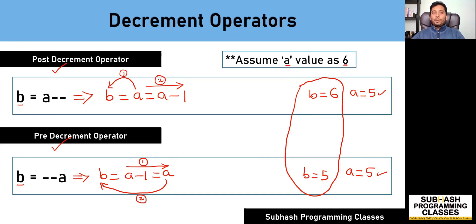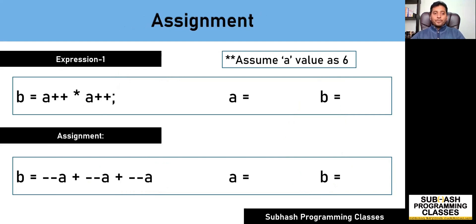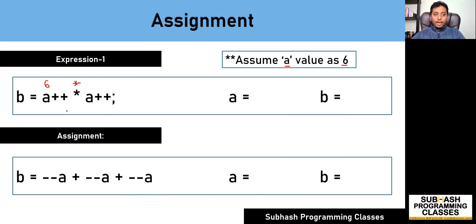Now let me solve an expression using the post increment operator. Assuming the value of a to be 6, the expression is b = a++ * a++. First, I take the value of a which is 6 because this is a post increment — I first fetch the value of a, so this becomes 6. Then by the time I come to the second sub-expression, a would have been incremented and becomes 7, so I fetch the value 7.